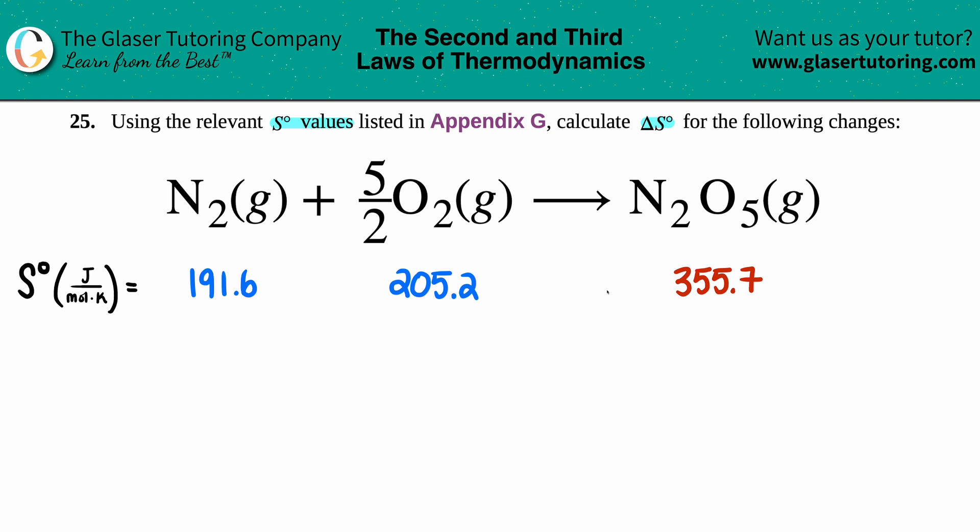They said we have to go to Appendix G, so that's what I did for you. This just means go to the back of the textbook to get your S values. This little degree sign means we're under standard conditions, which is why we get the appendix values.